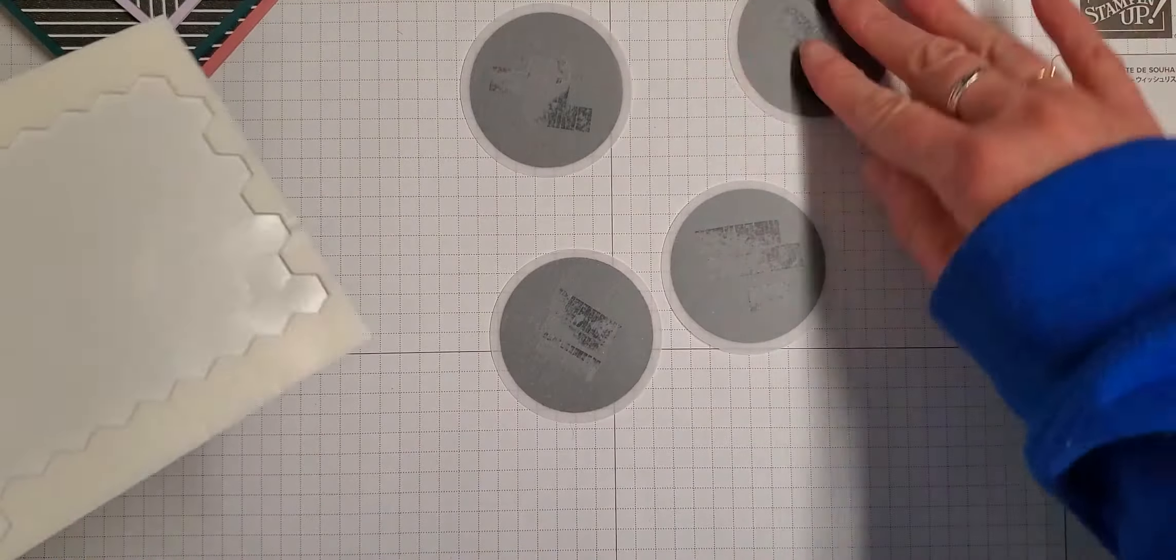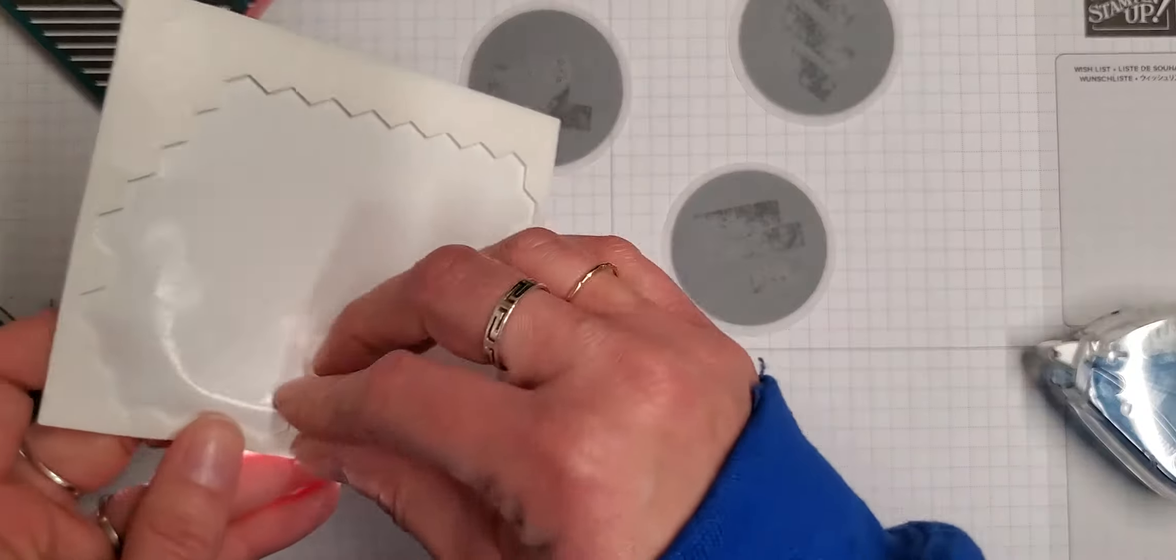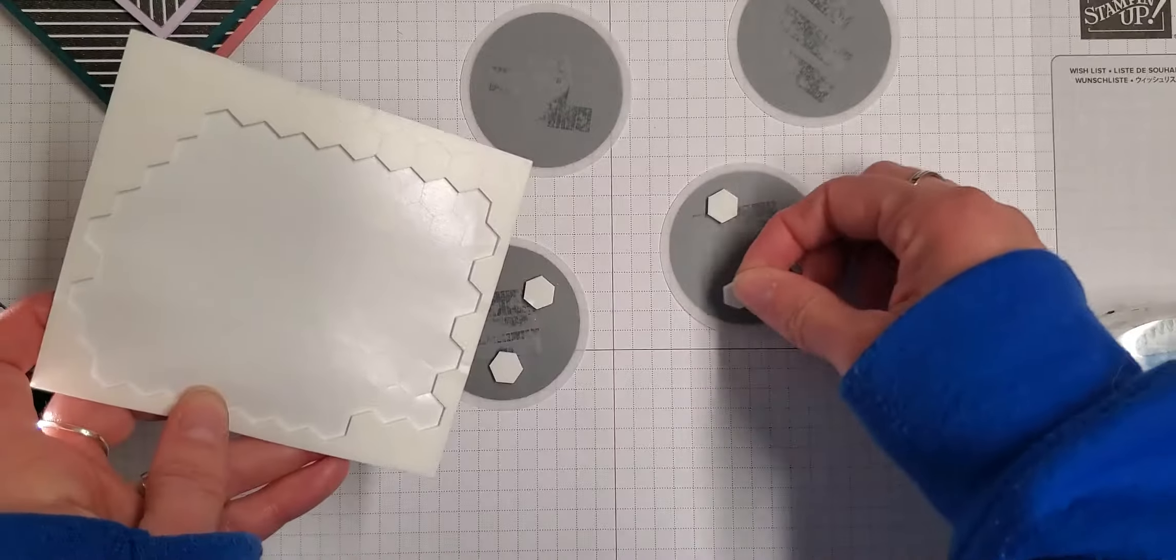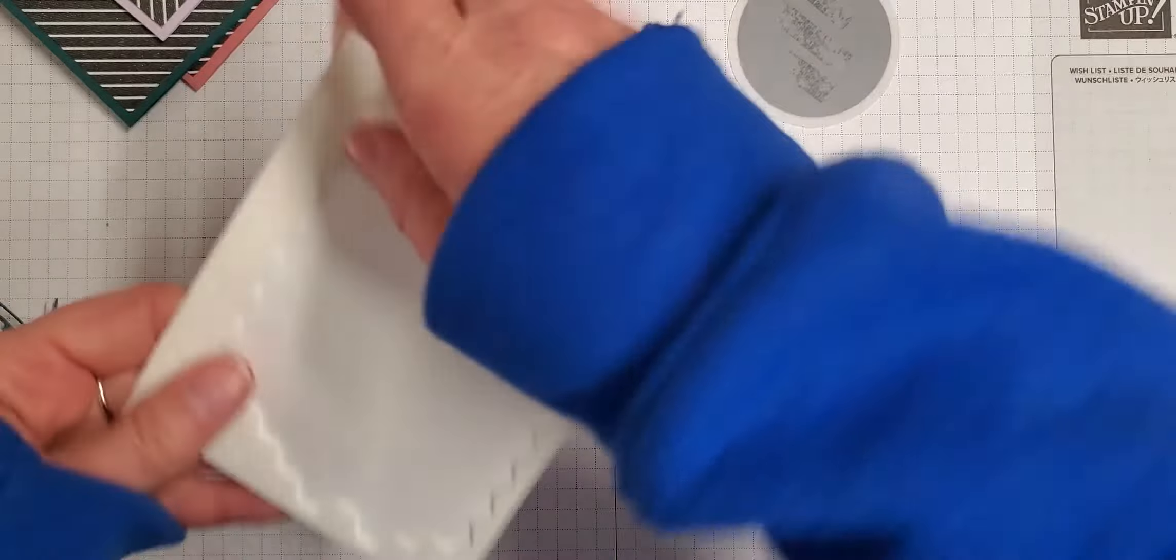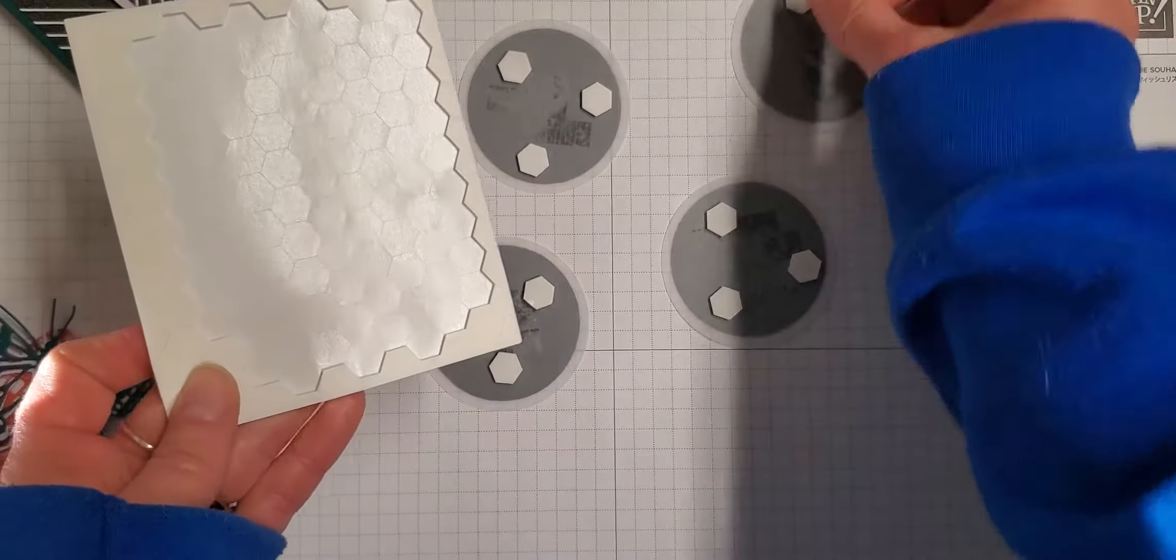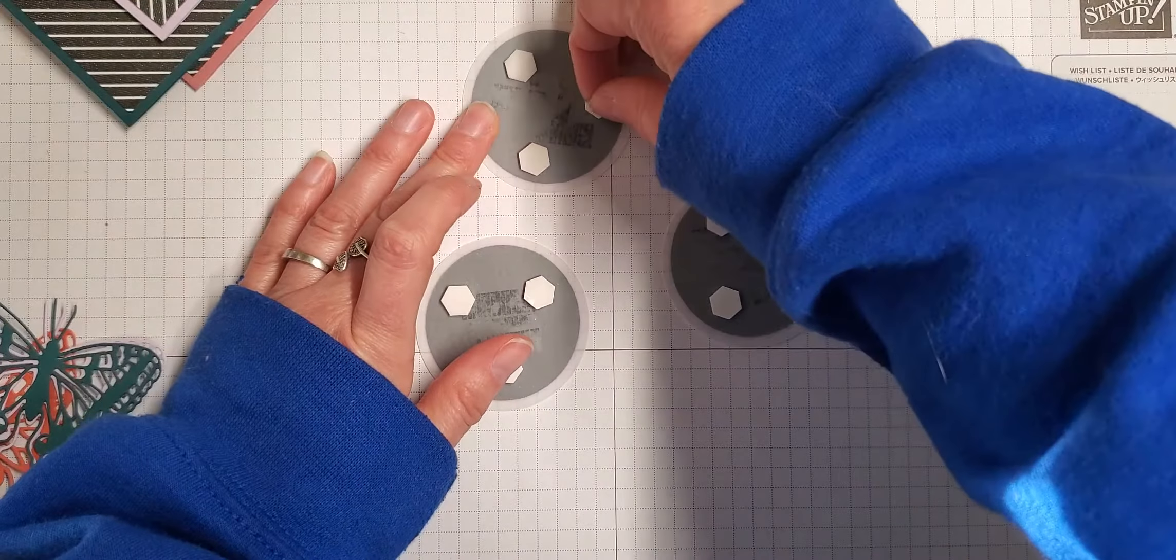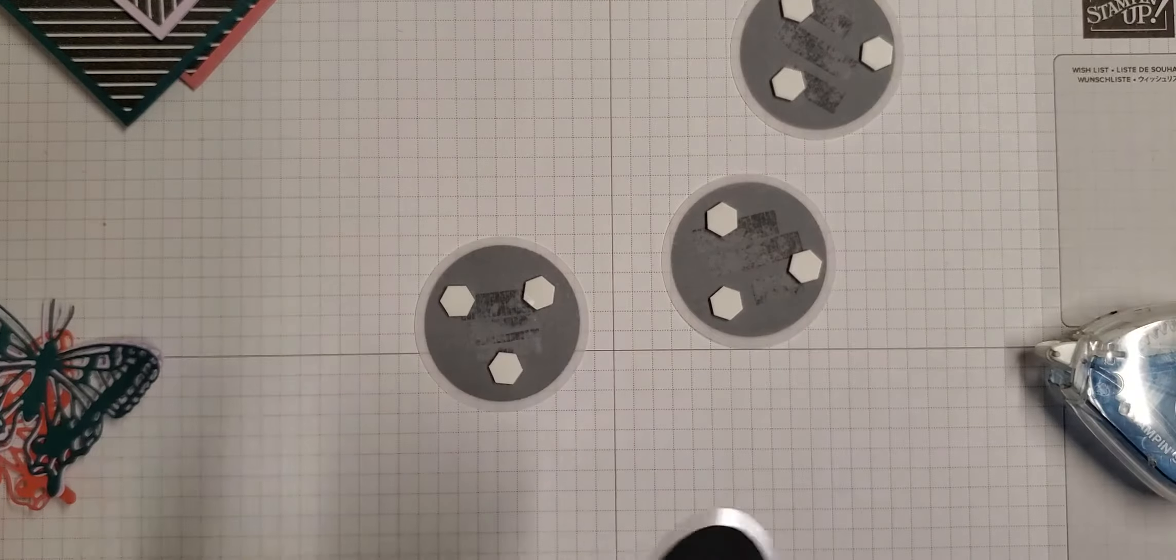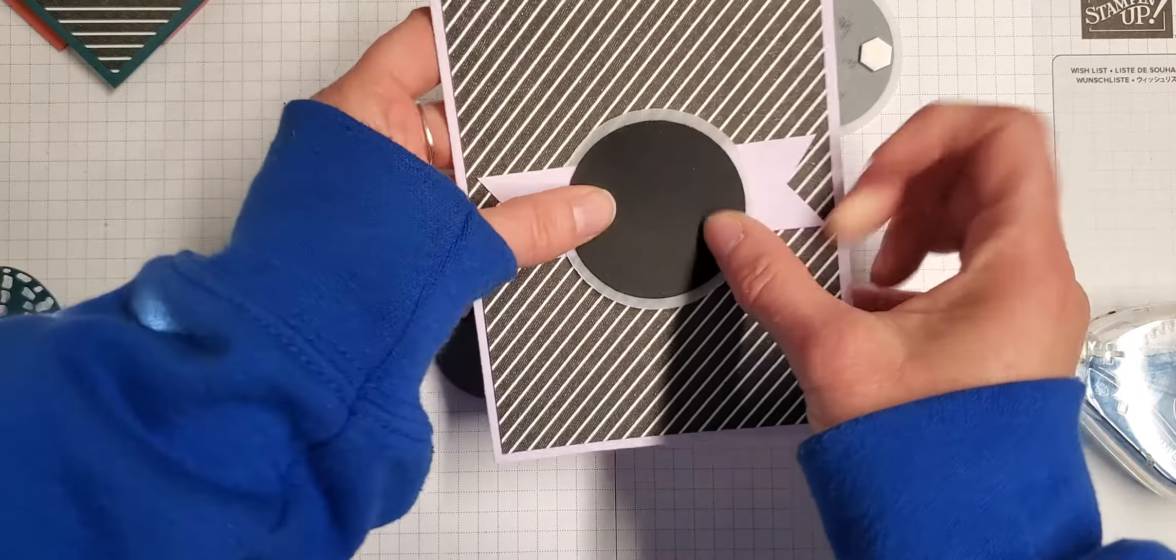So I'll flip all of these over and we're just going to add a few dimensionals in here. I like to do a triangle on the backs of my circles—one, two, three—keeps it steady so it doesn't sag in the middle.